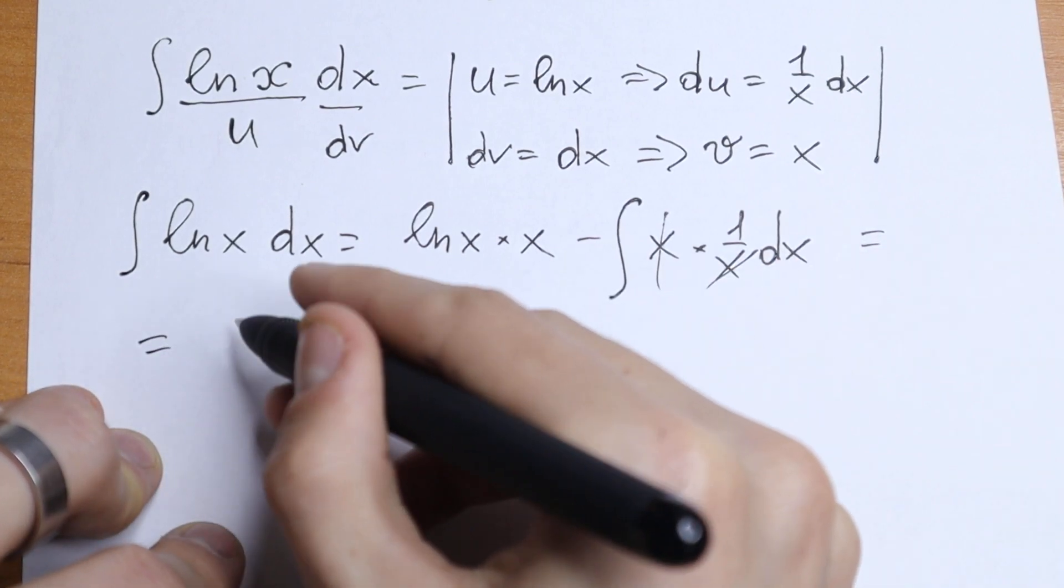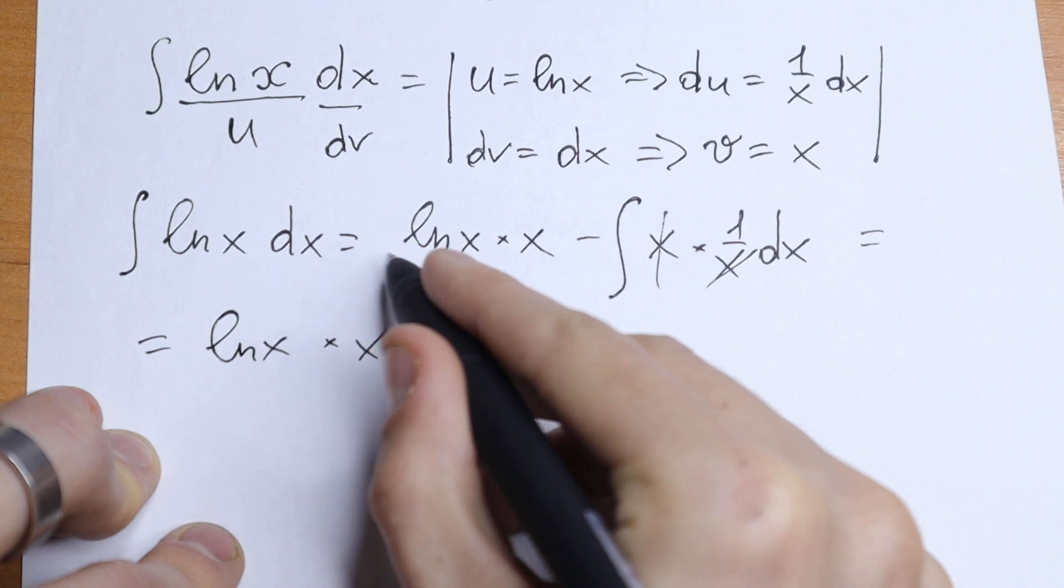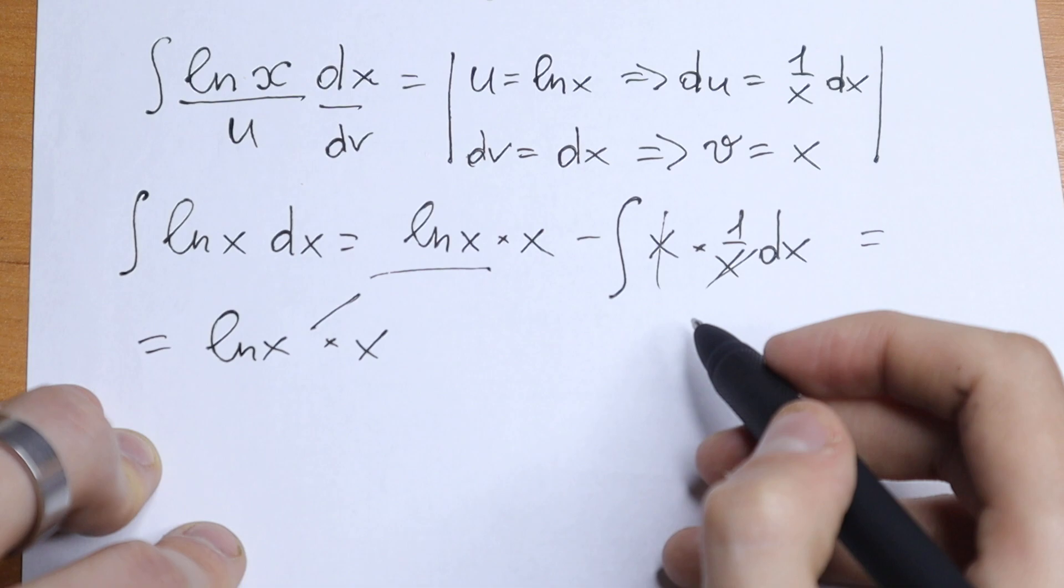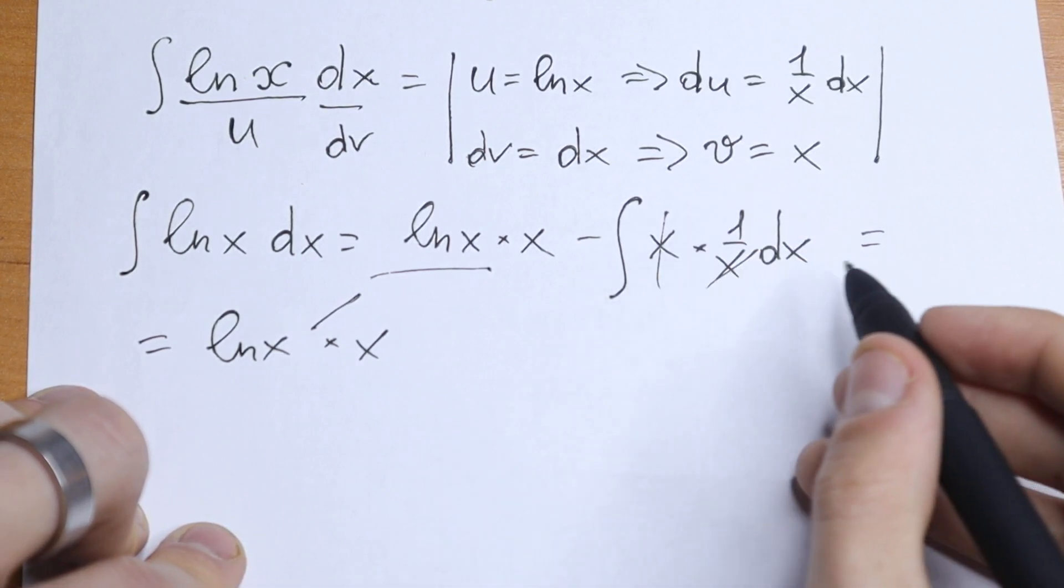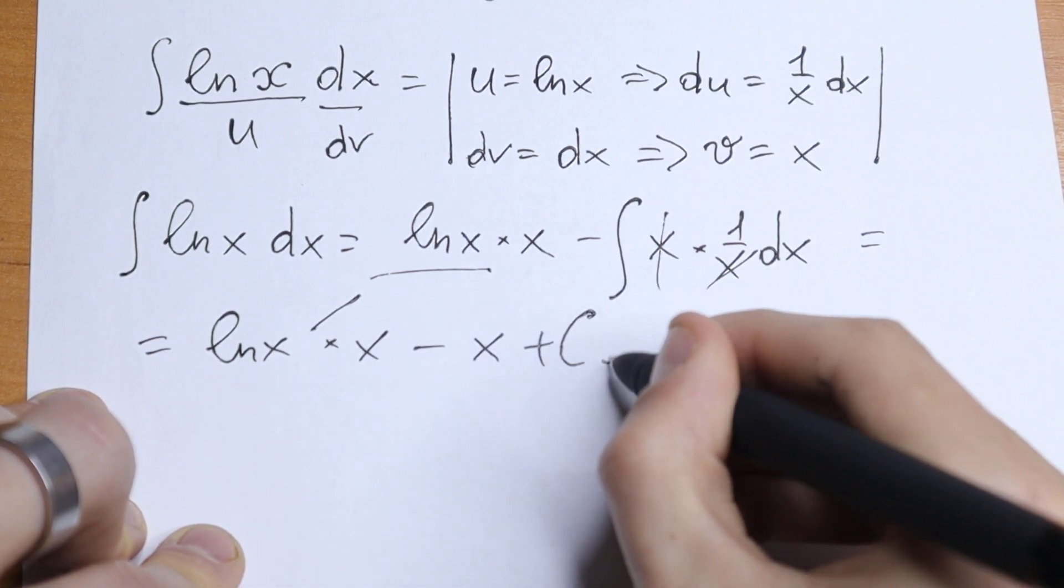As a result we will have natural log x times x. And right here we have only minus integral dx. So if we take this integral, we will have only our x, so minus x and plus C.